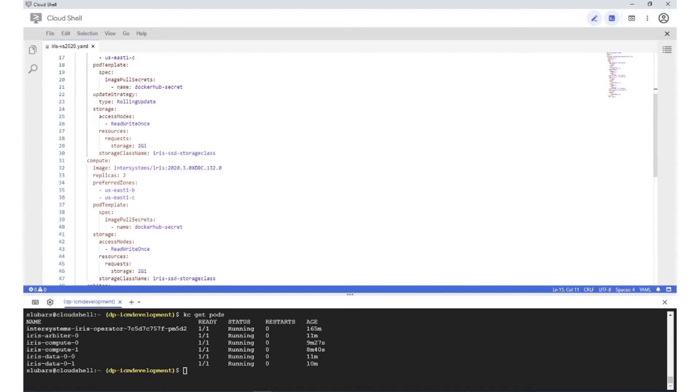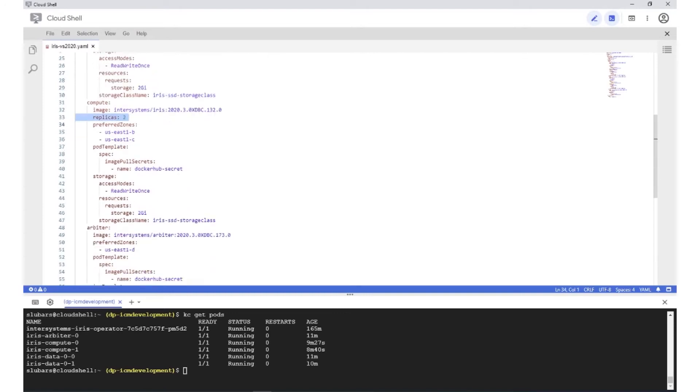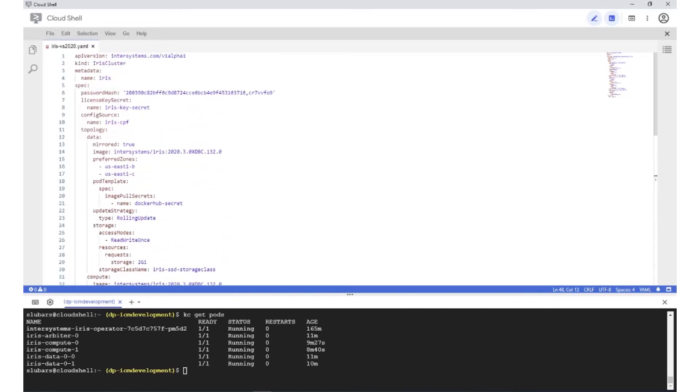We've defined under compute two replicas for two compute servers, and we have an arbiter. In the bottom half of the screen here, in the pod view, you can see all of these components up and running. This is the operator itself, the arbiter, the two compute nodes, and the two data pods.